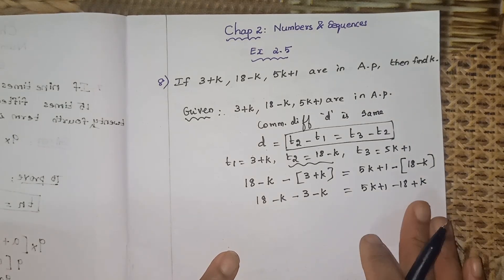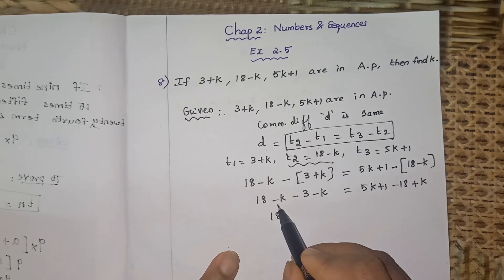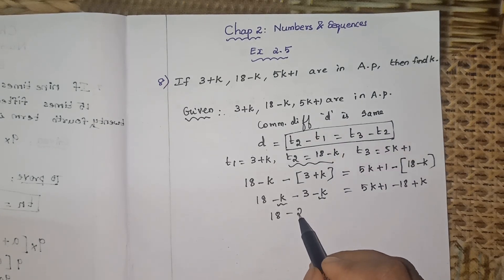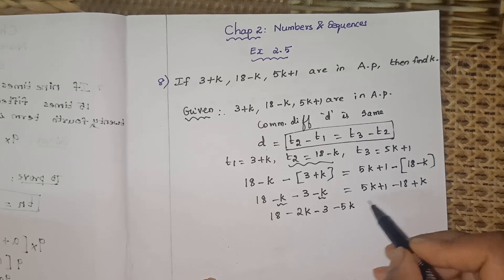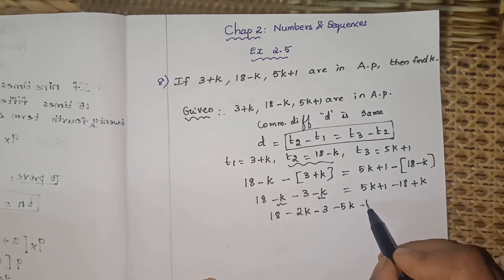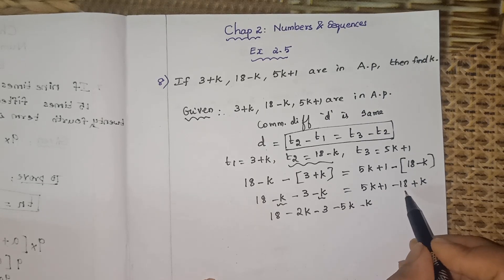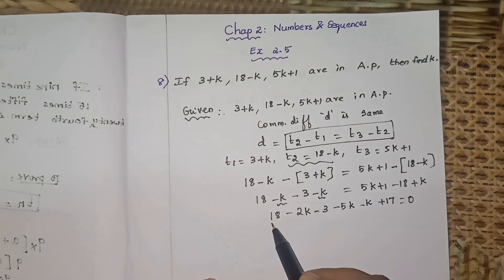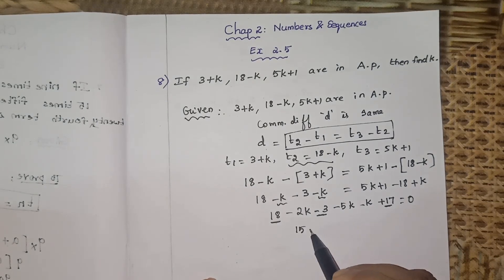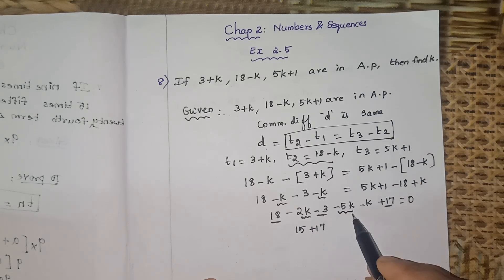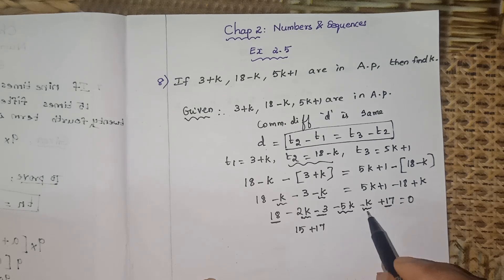Collecting all terms to one side: on the left we have 18 minus 3, and the k terms are minus k minus k giving minus 2k. On the right, 5k plus 1 minus 18 plus k. Bringing everything to one side: 15 plus 17 from the constants, and minus 2k minus 5k minus k gives minus 8k, equal to zero.